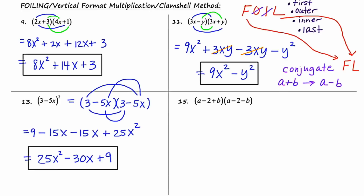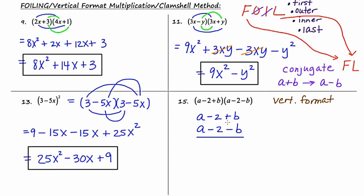For our last problem on this slide, we're multiplying two trinomials together. We're not going to FOIL here because FOIL is reserved specifically for two binomials. I'm going to use something called the vertical format, writing one polynomial on top of the other. In the vertical format, I start at the bottom left and distribute each term of the bottom polynomial into each term of the polynomial above it, keeping everything lined up vertically like an accountant would.